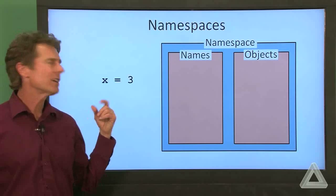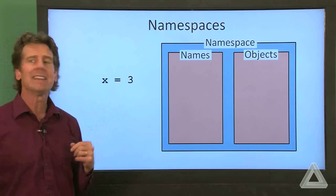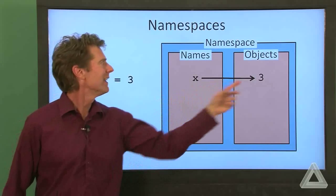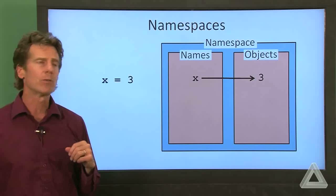If we write an assignment operation like x is equal to 3, it says, okay, here's a name. It's x, and I'm going to associate it with the value 3.